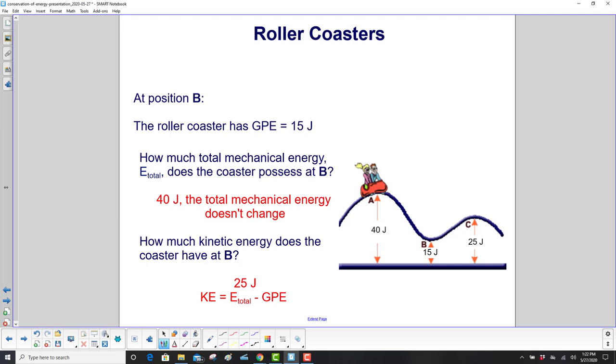So at position B, our answers are the total mechanical energy doesn't change. Energy is conserved. There are no external forces acting on the roller coaster. An external force would be friction, for example, but we're assuming there's no friction. So total mechanical energy is 40.